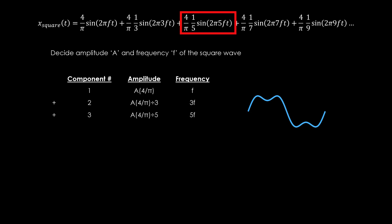The third component is going to have an amplitude a times 4 over pi, divided by 5, and frequency 5f.